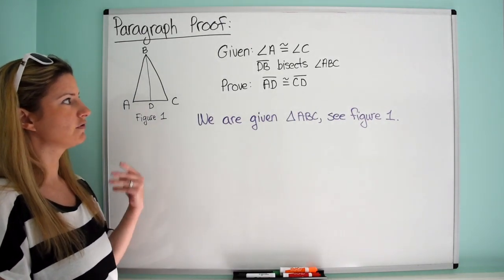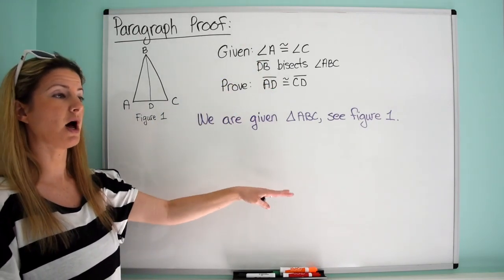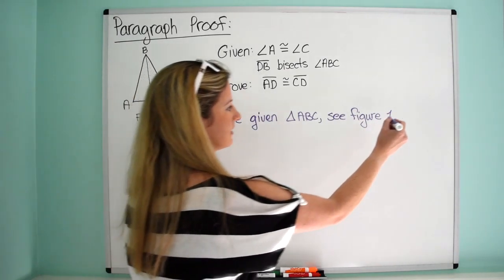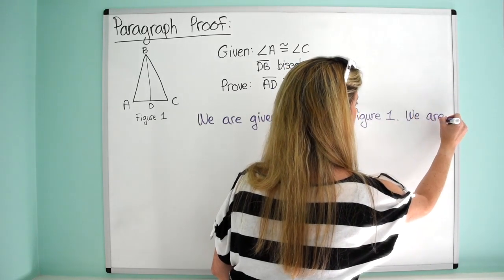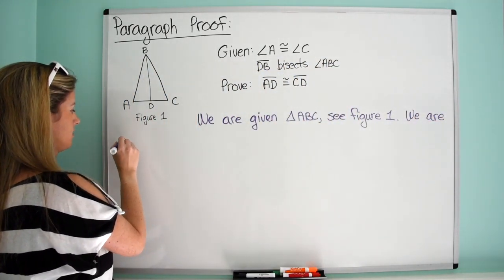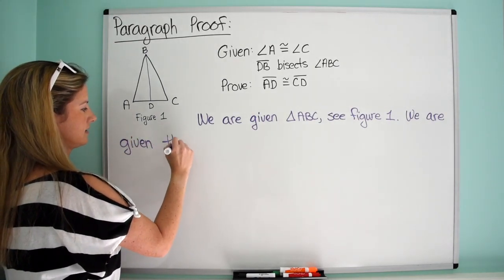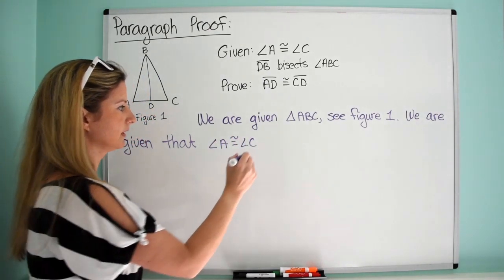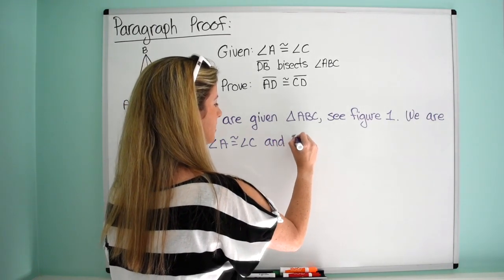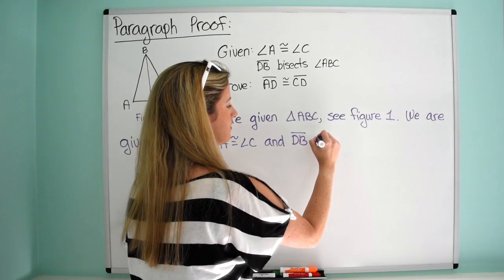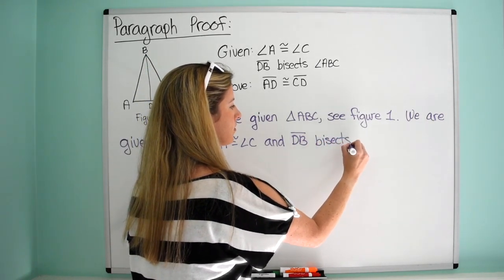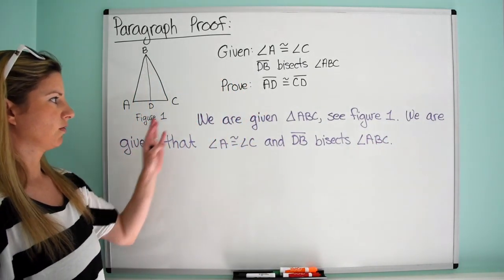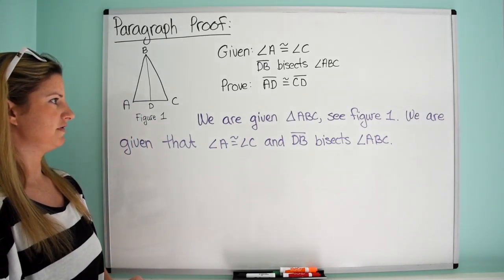Now the next thing we do for a paragraph proof is we list our given. Remember in our two-column proof we just list them, but in a paragraph proof we have to actually write them out. So we write: 'We are given that angle A is congruent to angle C, and segment DB bisects angle ABC.' So we've told everybody what figure to look at and we've now listed our given.